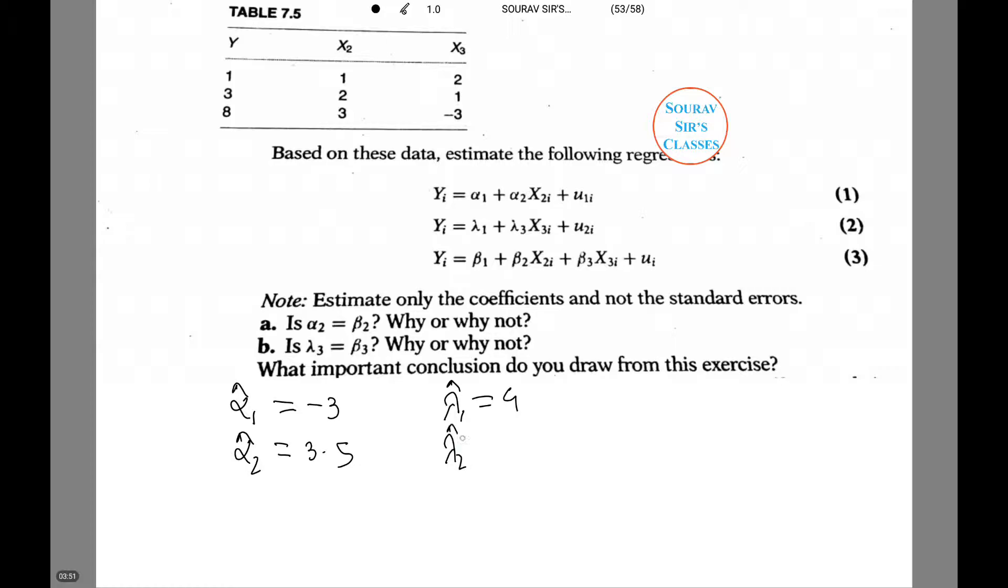Lambda 2 hat equals minus 1.357. Beta 1 cap equals 2, beta 2 cap equals 1, and beta 3 cap equals minus 1. Now based on this we find the following answers.